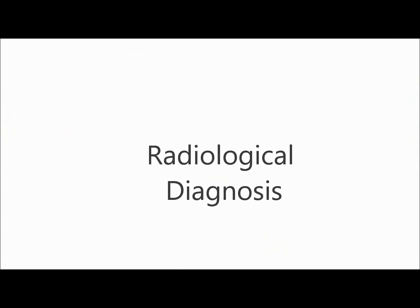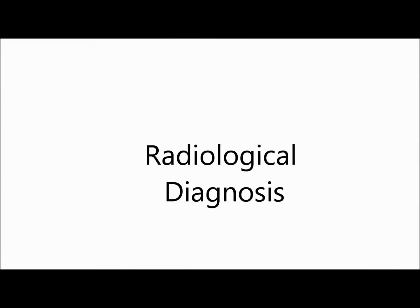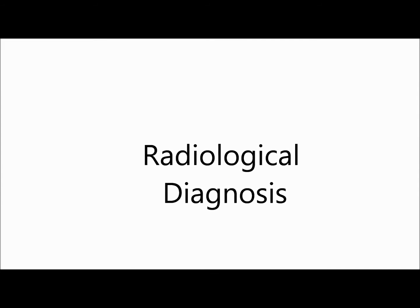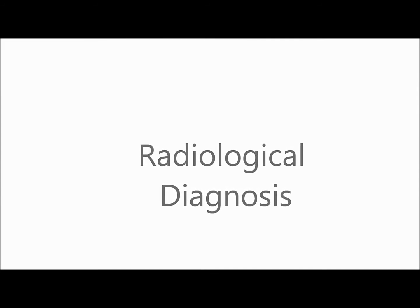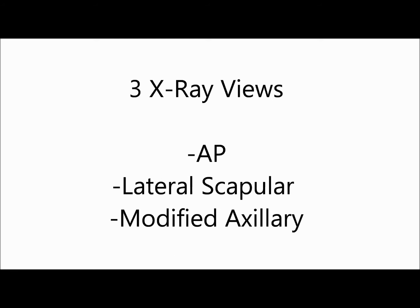X-rays should be taken before and after reduction to exclude fractures of the humerus or the glenoid. You will need three X-ray views to confirm shoulder dislocation: an AP view, a lateral scapular view, as well as a modified axillary view.